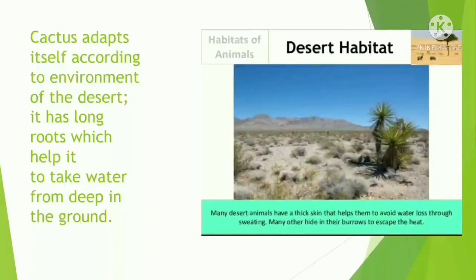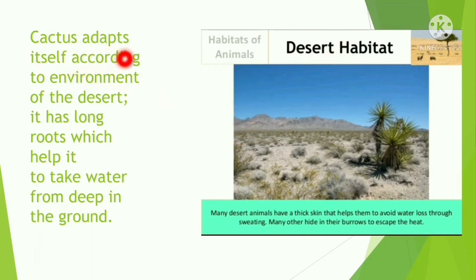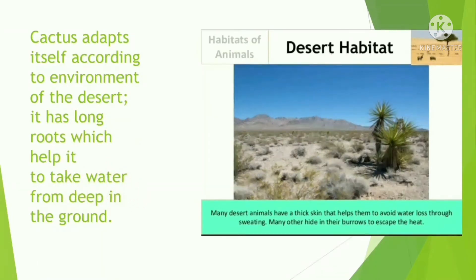Cactus is a spiky plant abundantly found in deserts — deserts are its natural habitat. Cactus adapts itself to the environment in order to survive; it has long roots which help it take water from deep in the ground, because deserts receive a very low amount of rainfall. Plants need to adapt themselves according to the place they live in, and that place is known as their habitat.